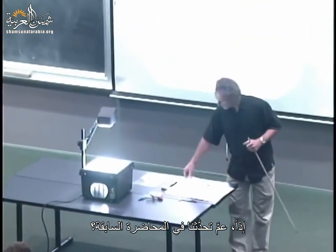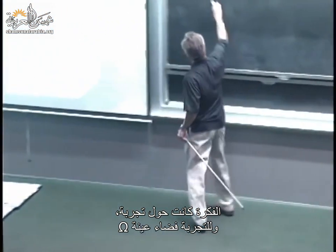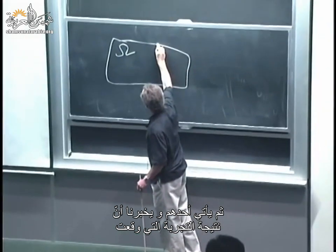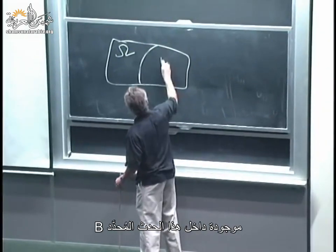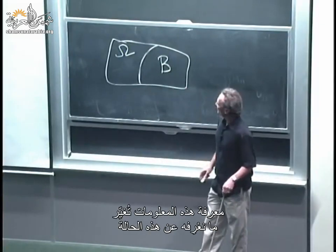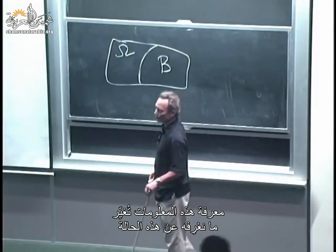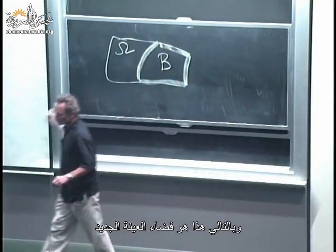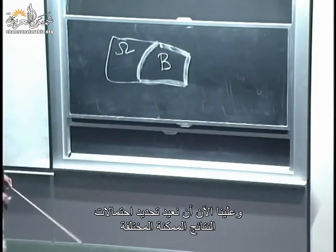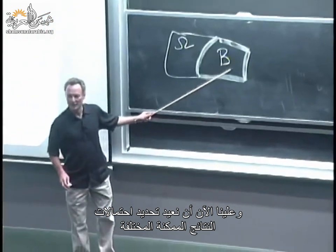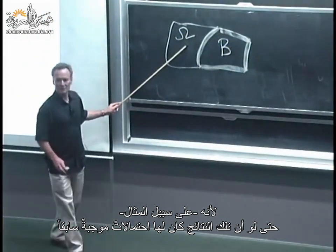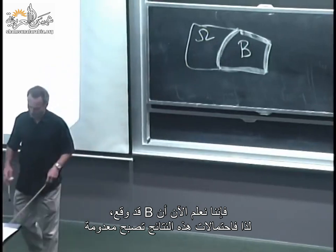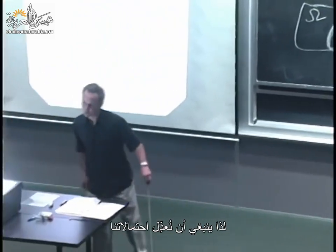So what did we talk about last time? The idea is that we have an experiment with a sample space omega. Somebody tells us that the outcome happens to lie inside event B. Given this information, the outcome is going to be somewhere inside B, so this is essentially our new sample space. We need to reassign probabilities to the various possible outcomes, because outcomes outside B now have zero probability. So we need to revise our probabilities.